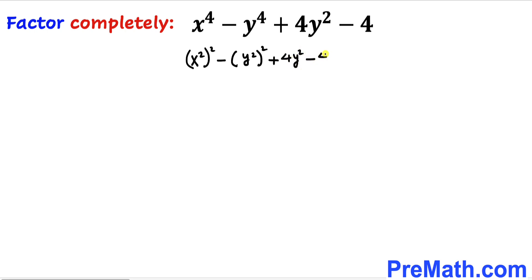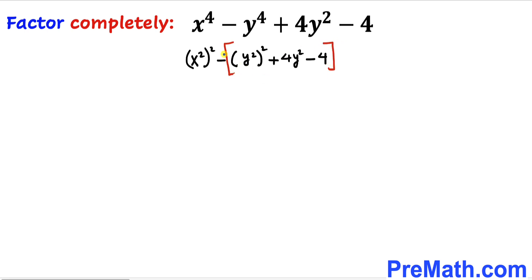Since we are going to find the factors, I have to manipulate this expression. I am going to tweak this part by chunking it in brackets. Now watch out — we have a minus sign outside, so we have to be very careful. The whole expression inside the bracket becomes: y square squared, and the positive sign becomes minus for y square, and the negative becomes positive 4.